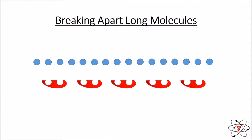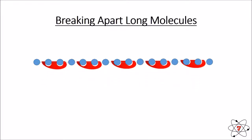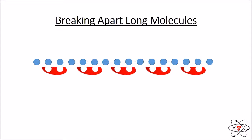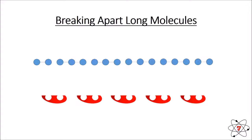Let's look at an example of how an enzyme might work. We have a very long chain molecule — blue dots joined together — which could be, for example, a starch molecule. The red semicircles with an active site represent our enzyme. The enzyme joins with the substrate and acts on it, and once it has finished acting, the long chain molecule is broken down into shorter chain molecules. This is exactly how an enzyme works.